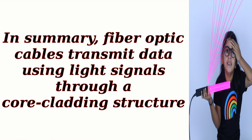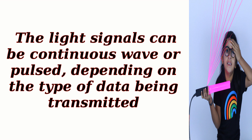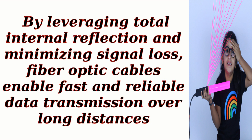In summary, fiber optic cables transmit data using light signals through a core-cladding structure. The light signals can be continuous wave or pulsed, depending on the type of data being transmitted. By leveraging total internal reflection and minimizing signal loss, fiber optic cables enable fast and reliable data transmission over long distances.